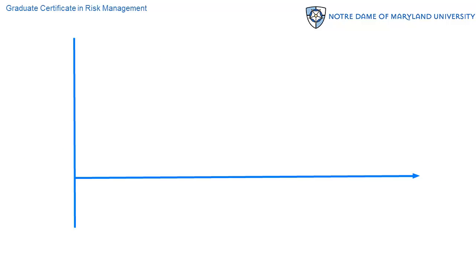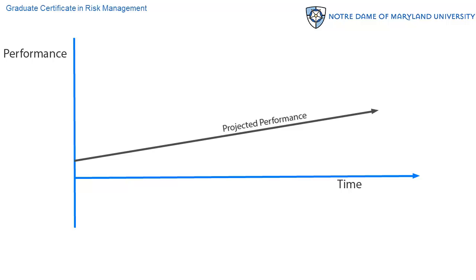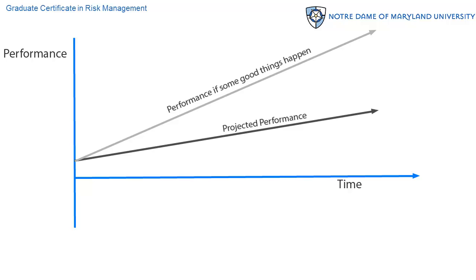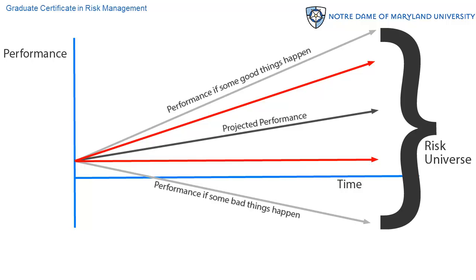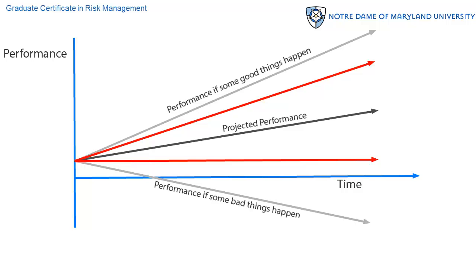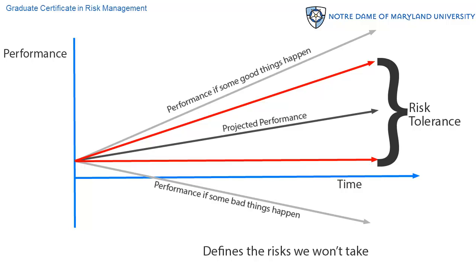Let's examine this relationship between risk appetite and risk tolerance a couple more ways to make sure we lock it in. Here we have the performance of a firm over time, and here is the firm's projected performance in pursuit of its objectives. If some good things happen, performance could be as high as this, but if some bad things happen, performance could drop to here. These two limits together define the risk universe of all the risks that exist. There are limits to the opportunities we will seek and the losses we will sustain. Together, these define our risk tolerance — these are the risks we will not take, that is, those between the red lines and the outer limits of the risk universe.